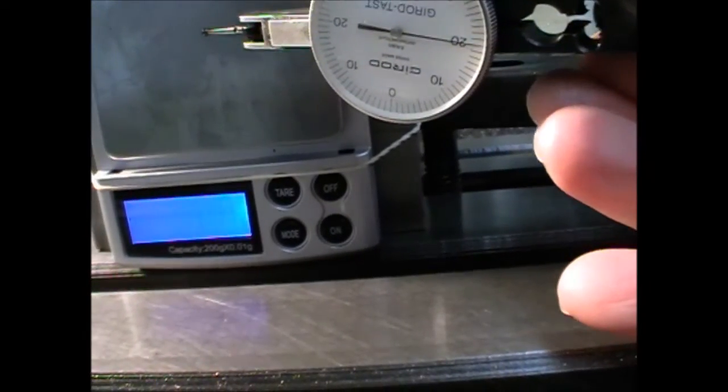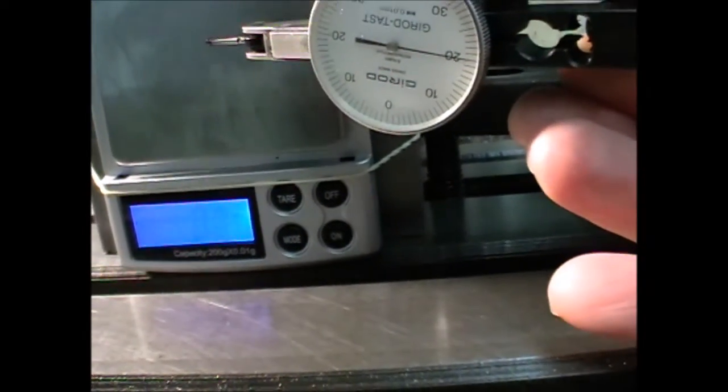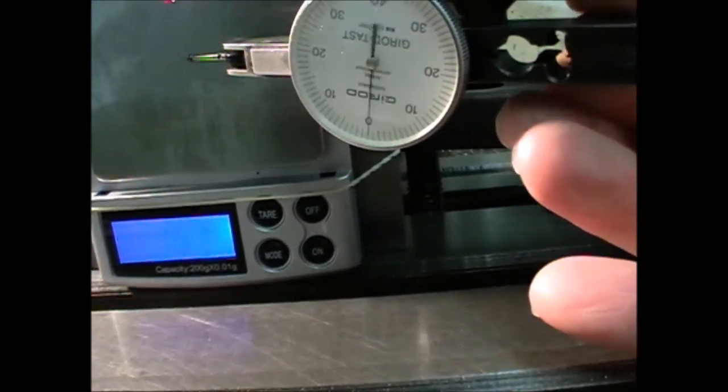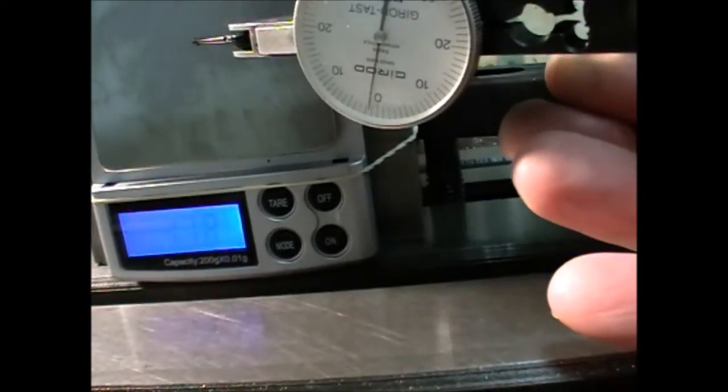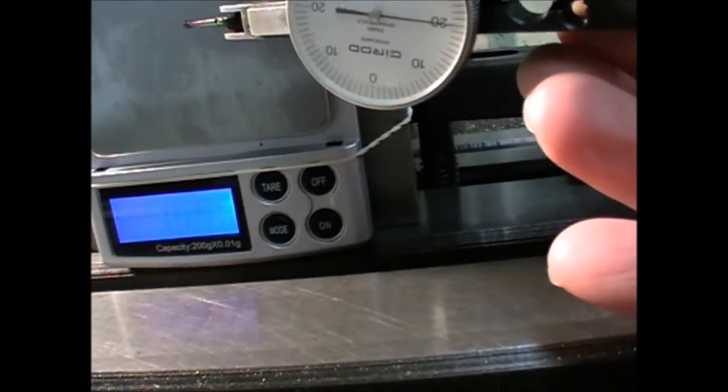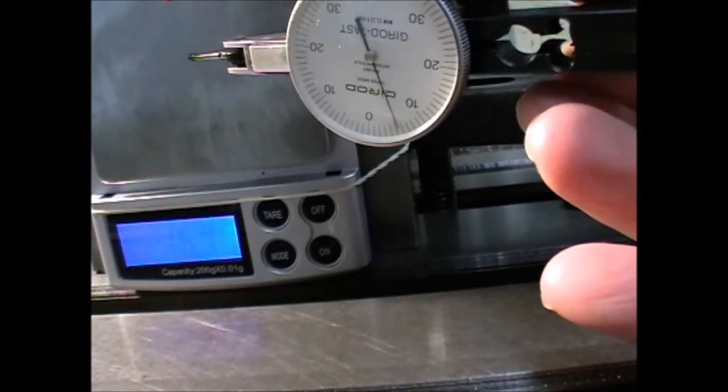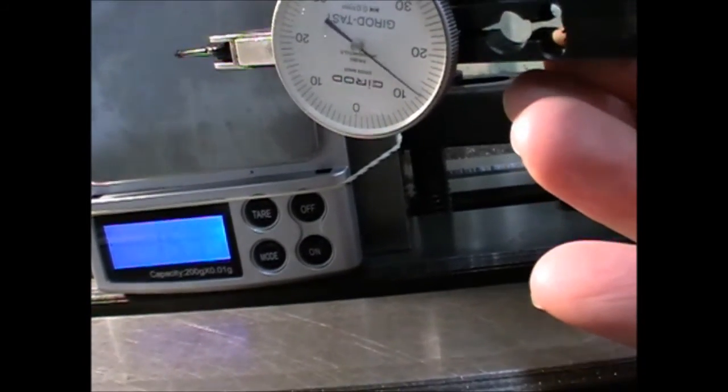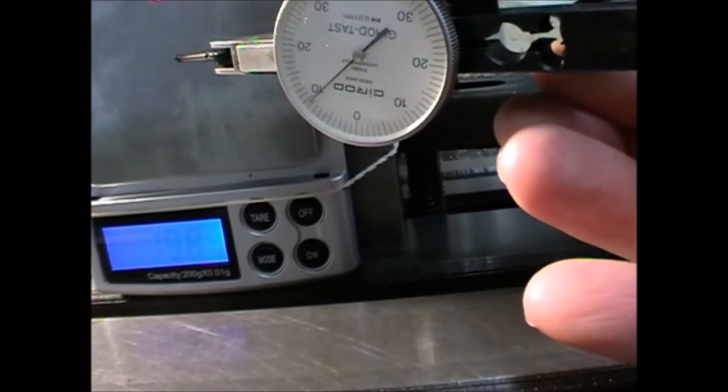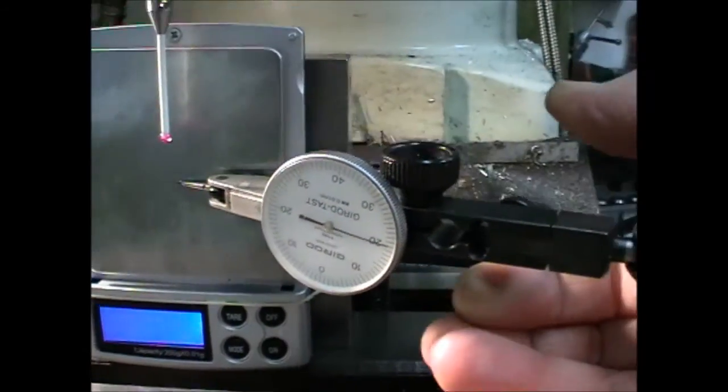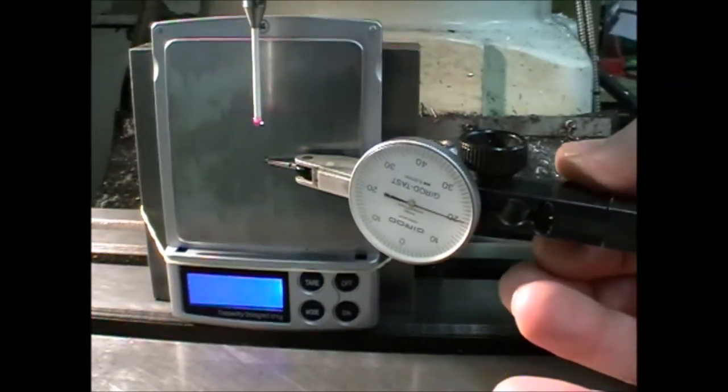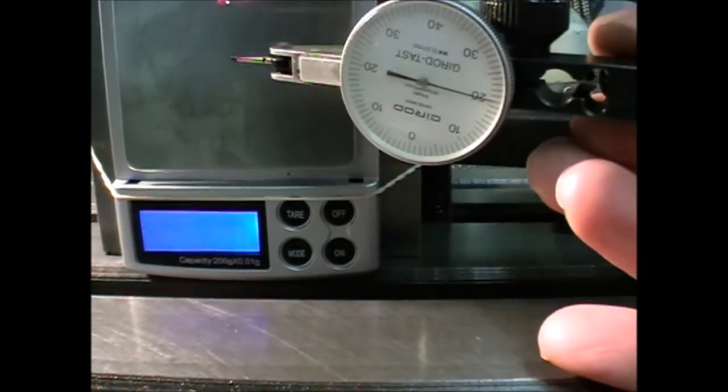Okay, so I'm moving the dial indicator in and out of contact now. We're on zero, put a bit of a movement on it, and we're getting about 17 grams. Obviously varies according to the amount - 17 grams, 20 grams.